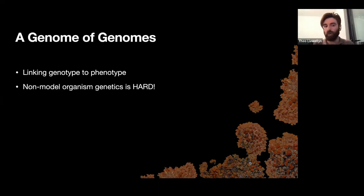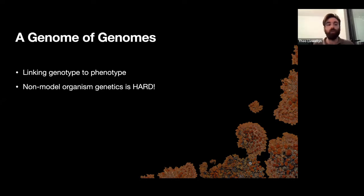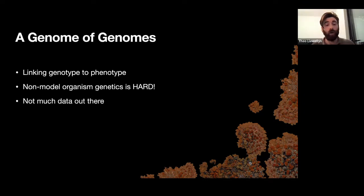Anyone who works on a non-model organism like a lichen will tell you that non-model organism genetics is really difficult. Lots of the tools — both software and lab protocols — are designed and optimized for model organisms, making it difficult to apply these methods to new groups. Also, if we're interested in finding genes related to certain phenotypes without knowing how many genes the organism has, how big its genome is, its genome structure, or how many chromosomes it has, it's really difficult to understand what's going on.